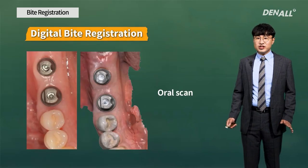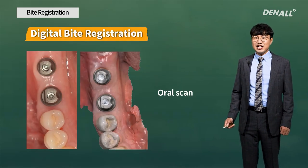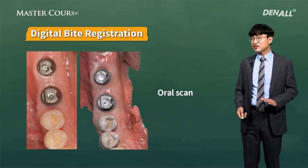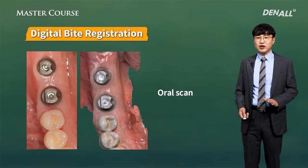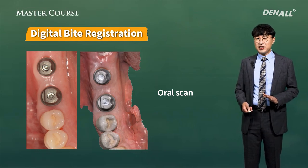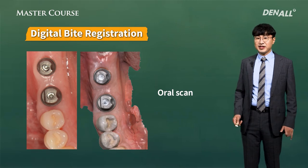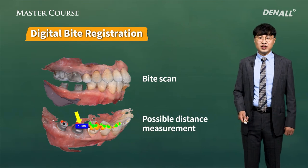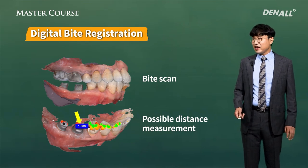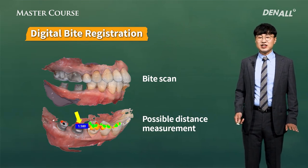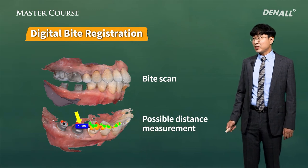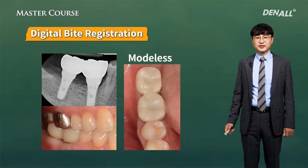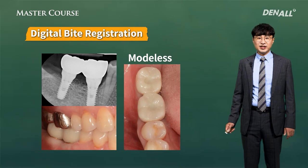The interocclusal space was not sufficient, and the 4 mm shortest abutment could not be used. So sometimes it is modified for usage. In such cases, after the abutment is modified, you scan with an oral scanner — then you can check whether the distance is sufficient. So it's very useful. The final prosthesis was then made.